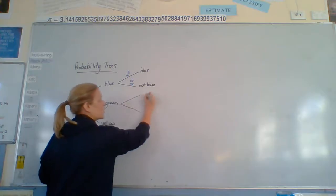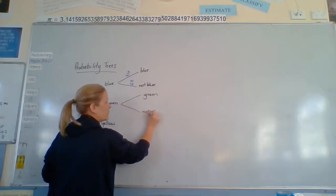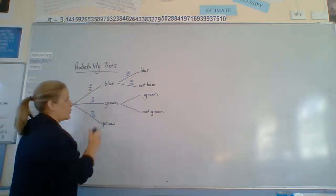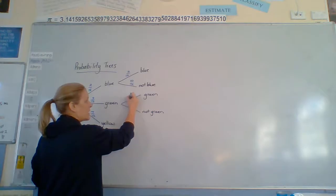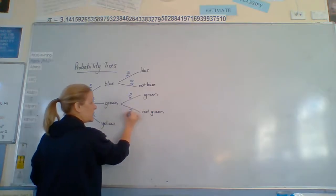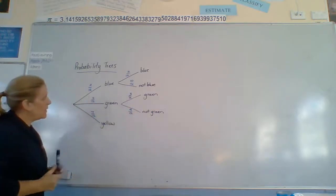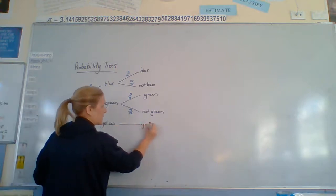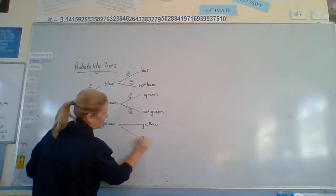We've got green and not green. So, in this case we have 3 out of 12, and 12 take away 3 is 9 out of 12 that are not green. And this one? Yellow and not yellow.